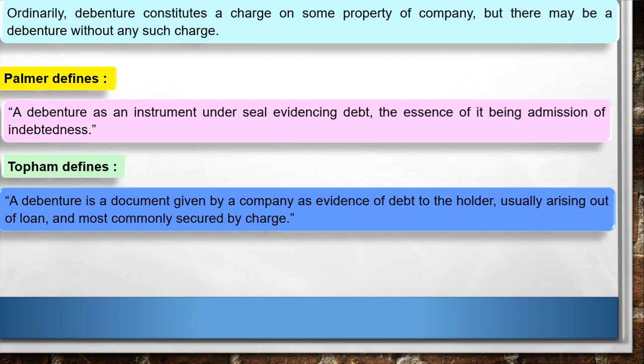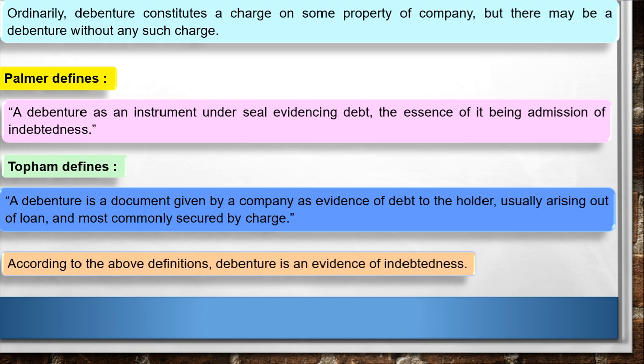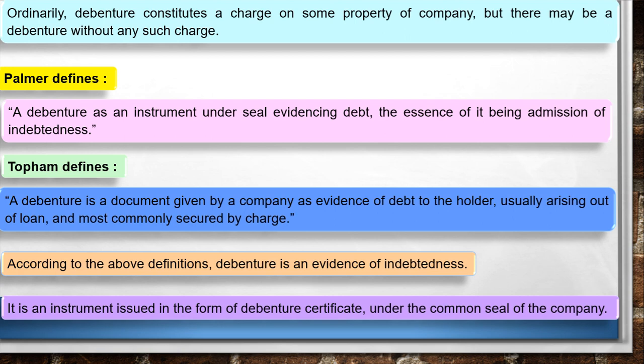Topham defines: 'A debenture is a document given by a company as evidence of debt to the holder, usually arising out of a loan, and most commonly secured by a charge.' According to the above definitions, debenture is an evidence of indebtedness — an instrument issued in the form of a debenture certificate under the common seal of the company.